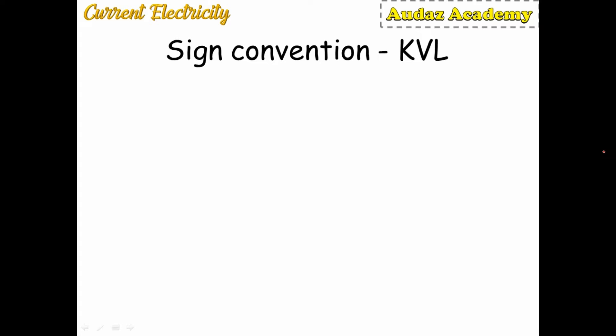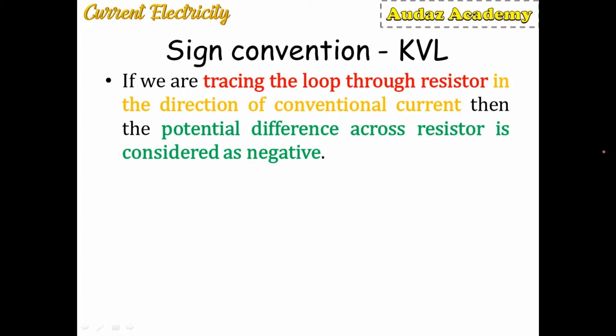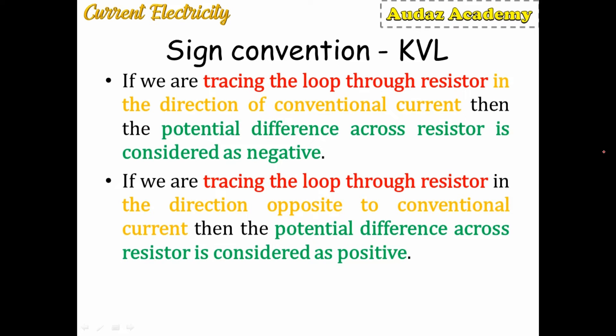The sign conventions for Kirchhoff's voltage law: if we trace the loop through a resistor in the same direction as conventional current, the potential difference across that resistor is considered negative. If the tracing direction and conventional current are opposite, the potential difference is considered positive.